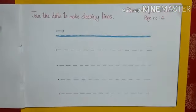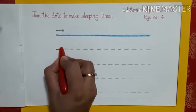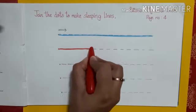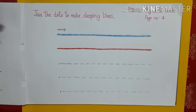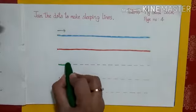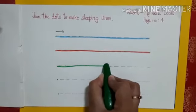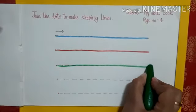So let's start. Keep your crayon properly, move forward. Yes, like this we are going to join the dots to make the sleeping lines from left to right.